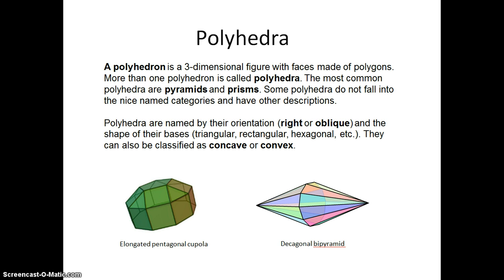Sometimes we'll have a shape that doesn't fall into these specific categories, and so we have to come up with a more creative name. Here, the green polyhedron is called elongated pentagonal cupola, where a cupola is an architectural term that's kind of like a dome at the top of your house.